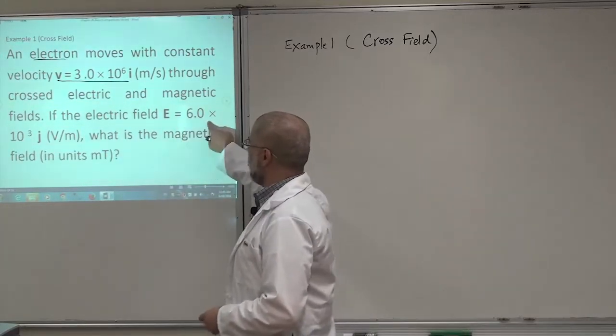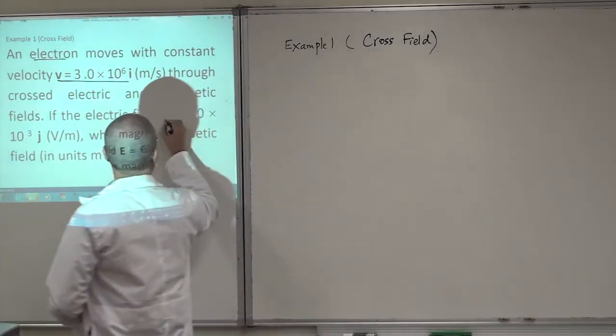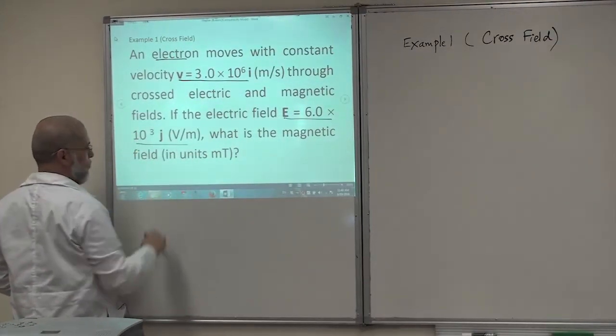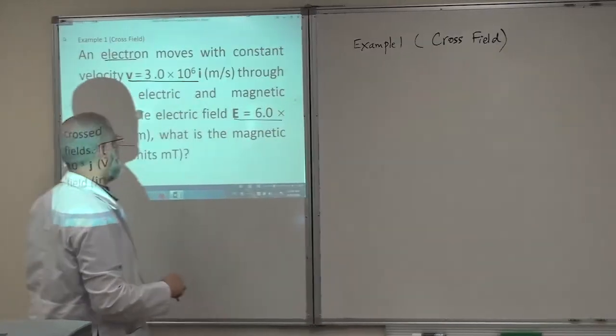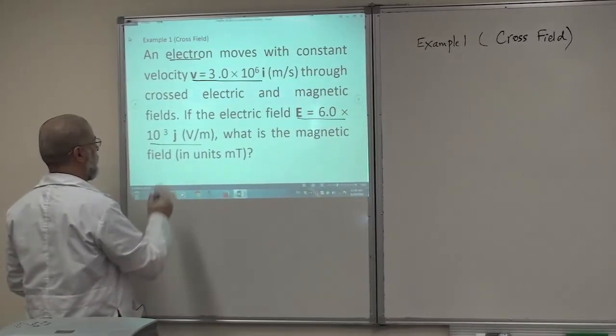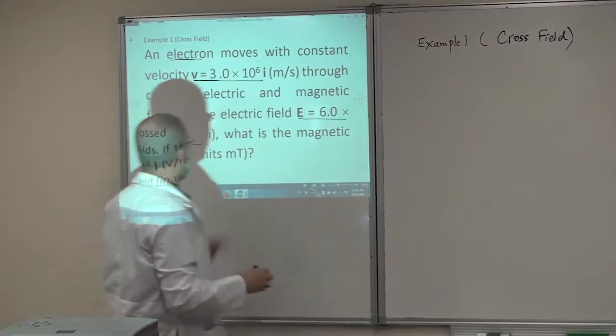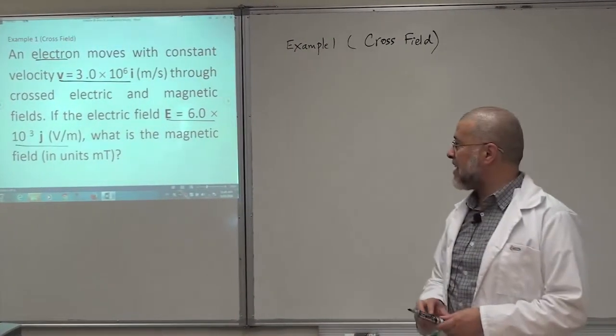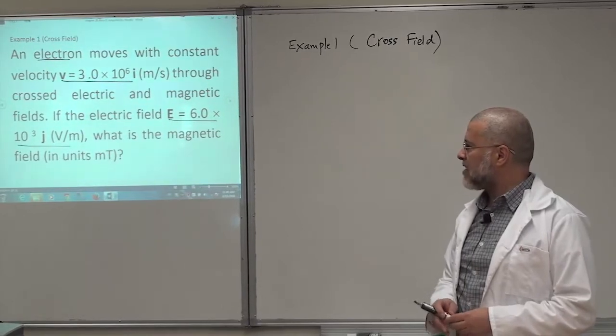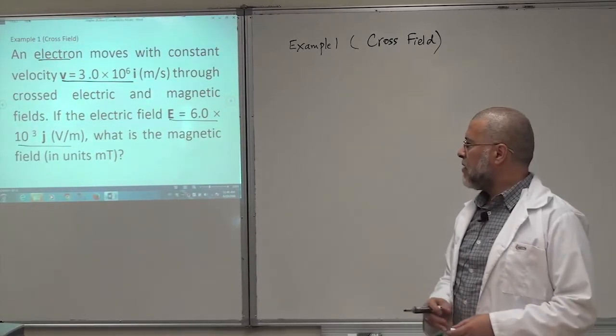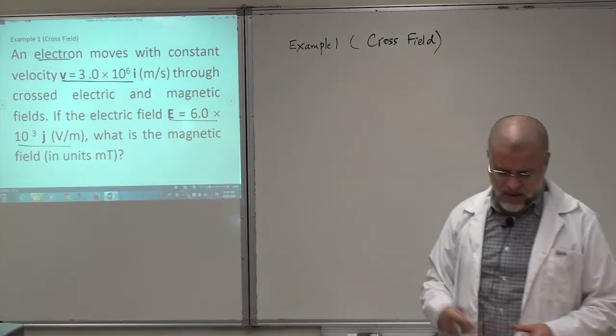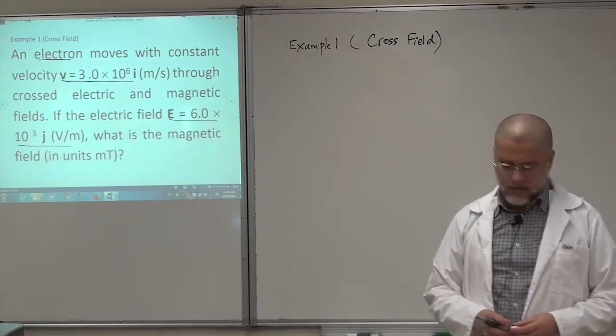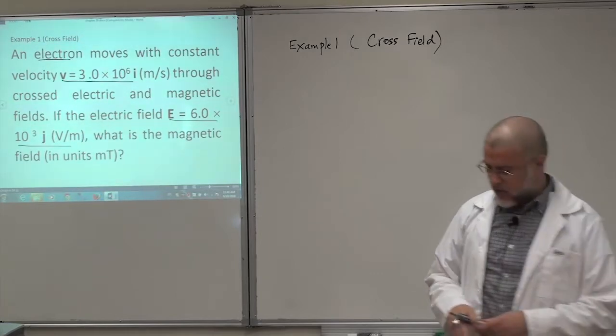The electric field is along this direction. This is the magnitude and that's the direction, J. And the units is volt per meter. What is the magnetic field? He wants B in unit Tesla, in the unit milli-Tesla. It doesn't matter, we are going to find the answer in Tesla anyway, but later you can find it in milli-Tesla.